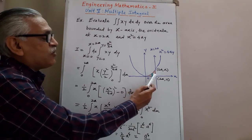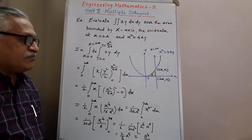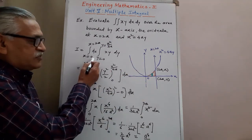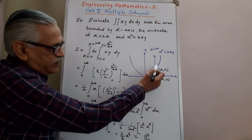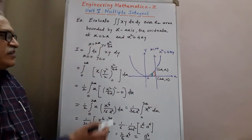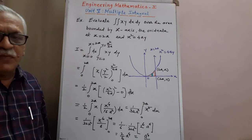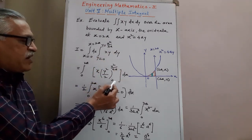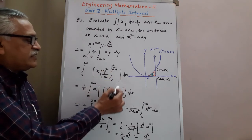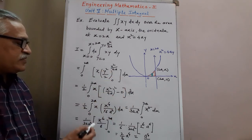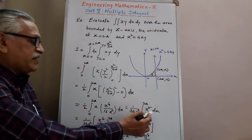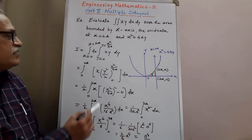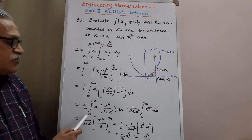Then draw the strip, either parallel to the x-axis or y-axis — here drawn parallel to the y-axis. Since it is parallel to the y-axis, first integration is with respect to y. Obtain the limits: lower end on x-axis means y equals 0, upper end on the curve means y equals x squared by 4a. Moving the strip from x equals 0 to x equals 2a covers the full region.